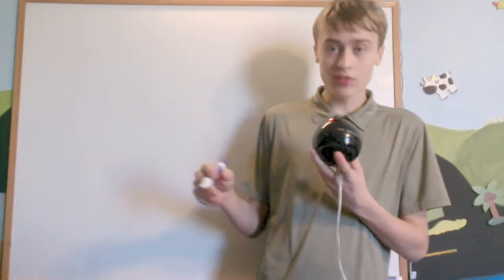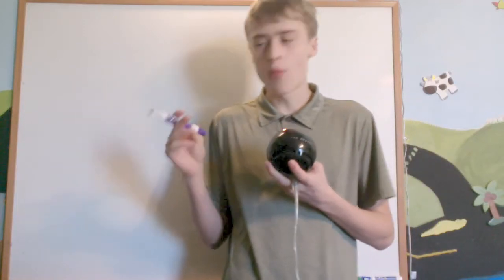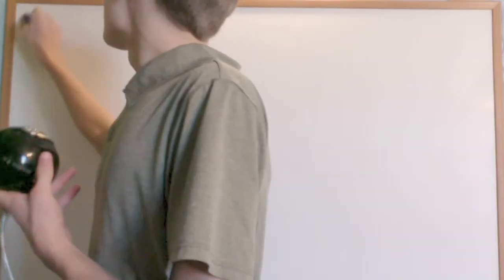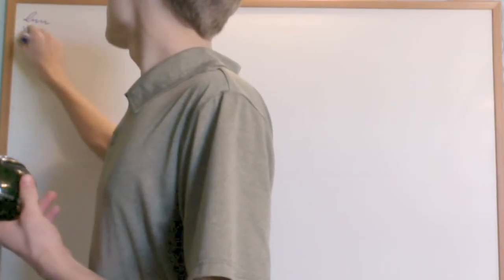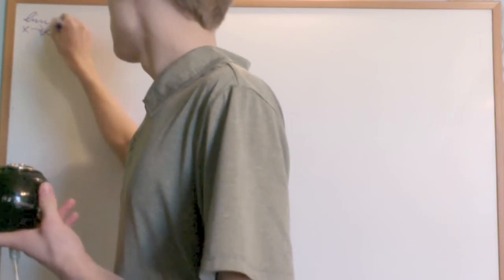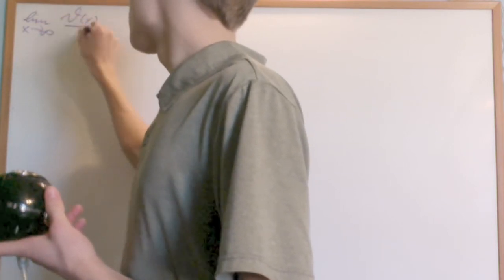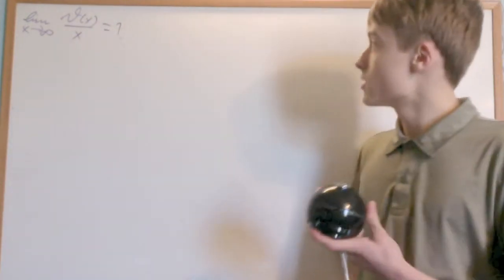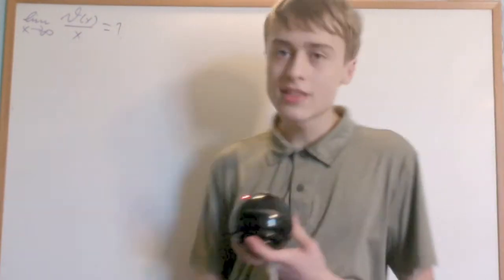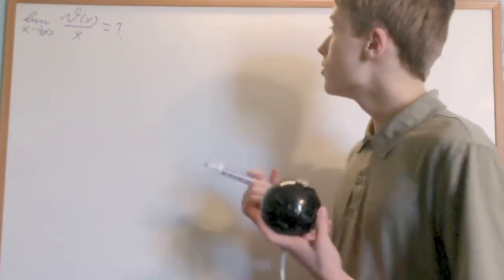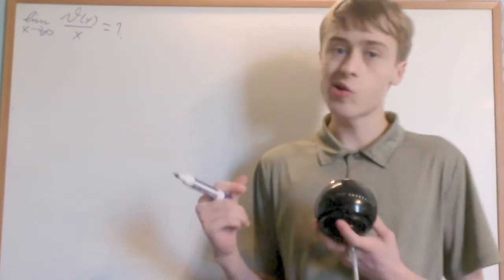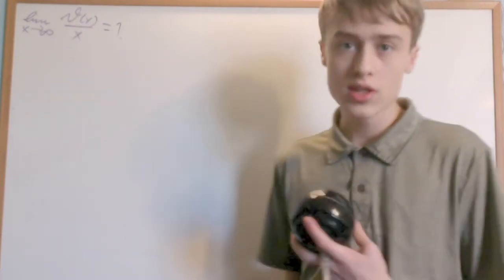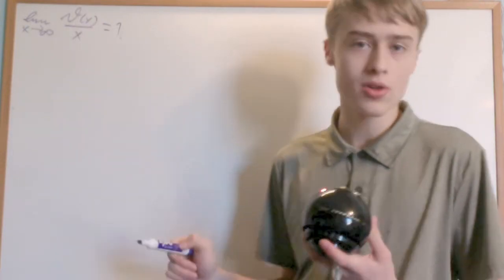In this video, I'll be proving the prime number theorem once and for all. More specifically, I'm going to prove that the limit as x goes to infinity of θ(x) over x is equal to 1. How I'm going to do this is not by looking at this limit in particular — I'm going to prove that θ(x) does not grow particularly faster than x or particularly slower than x.